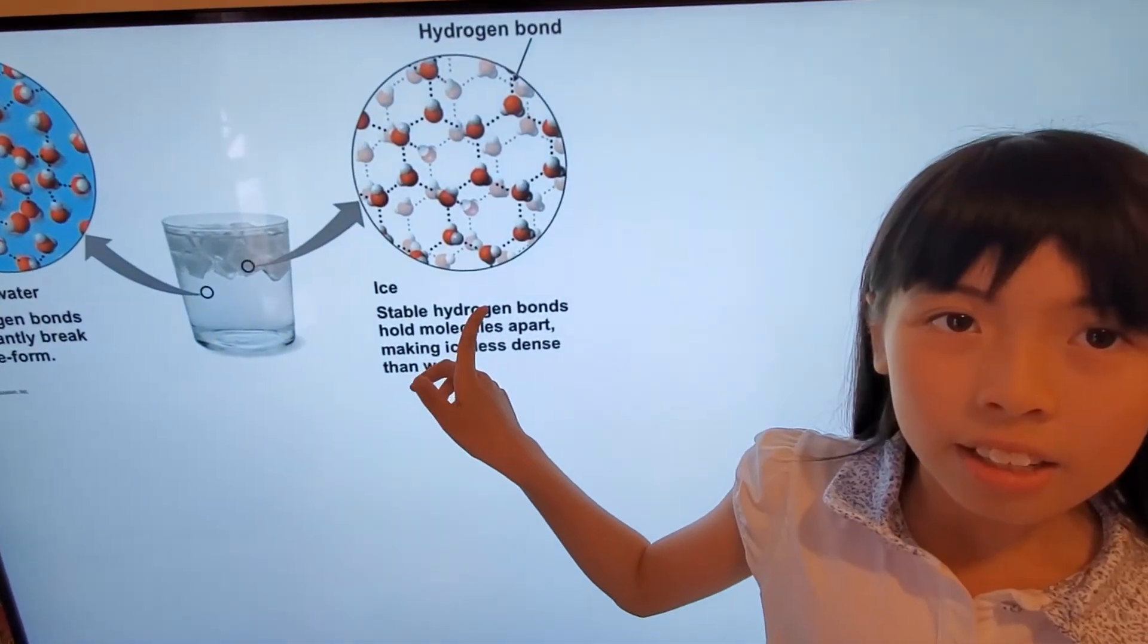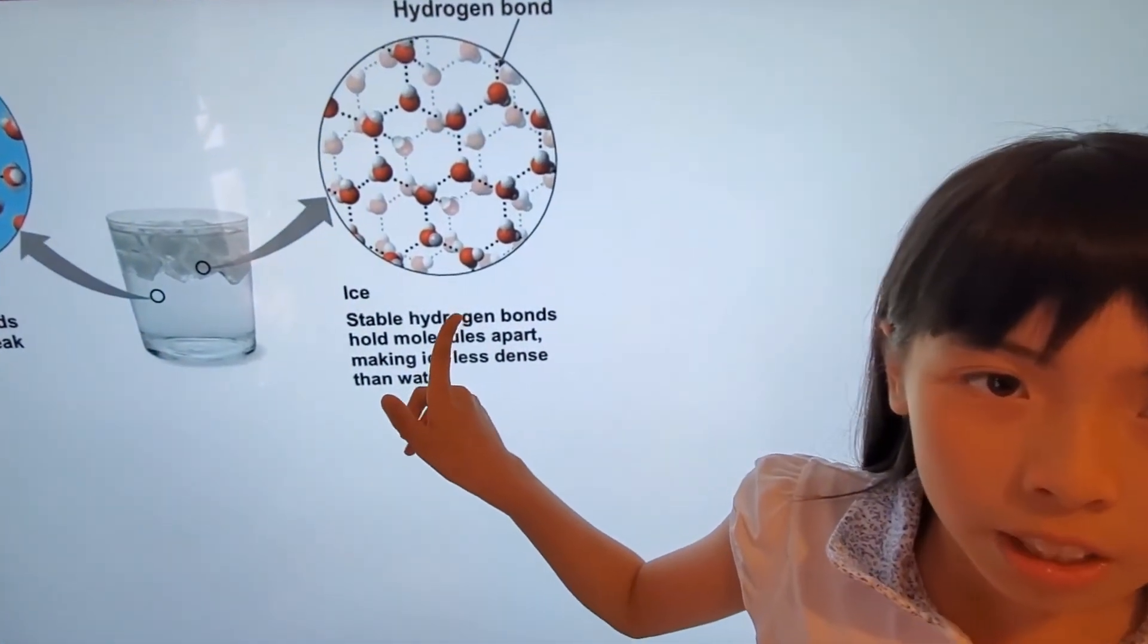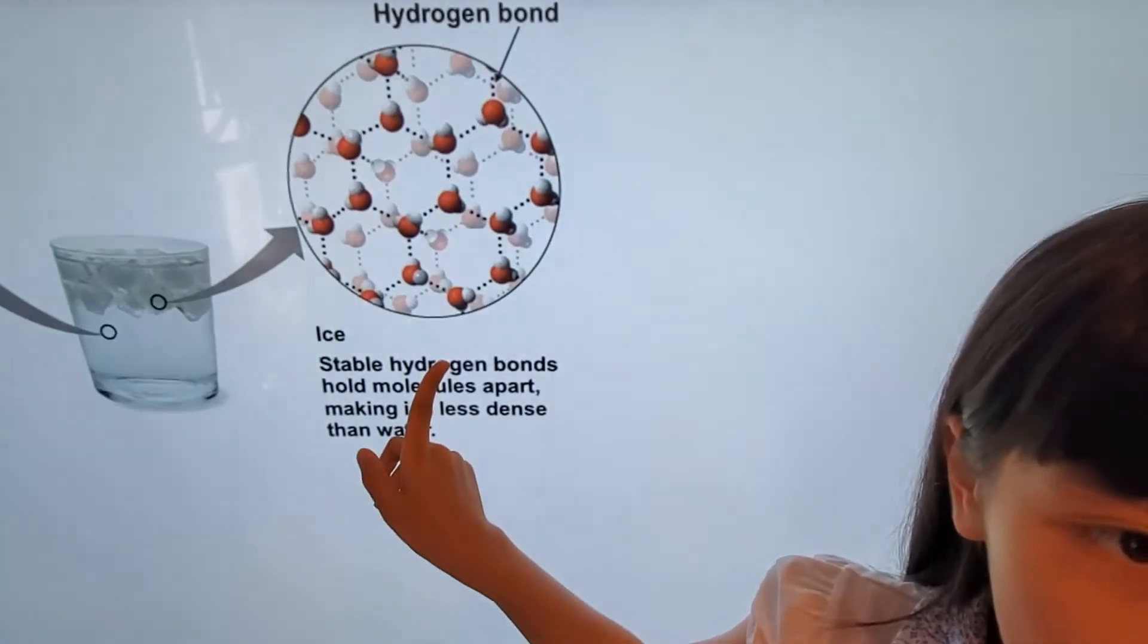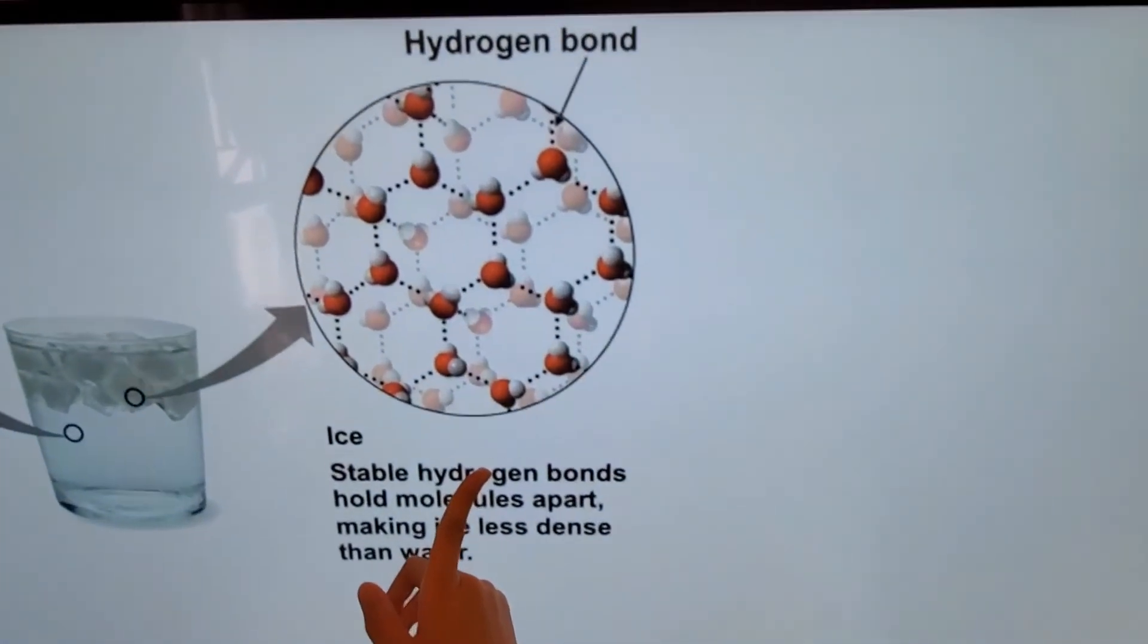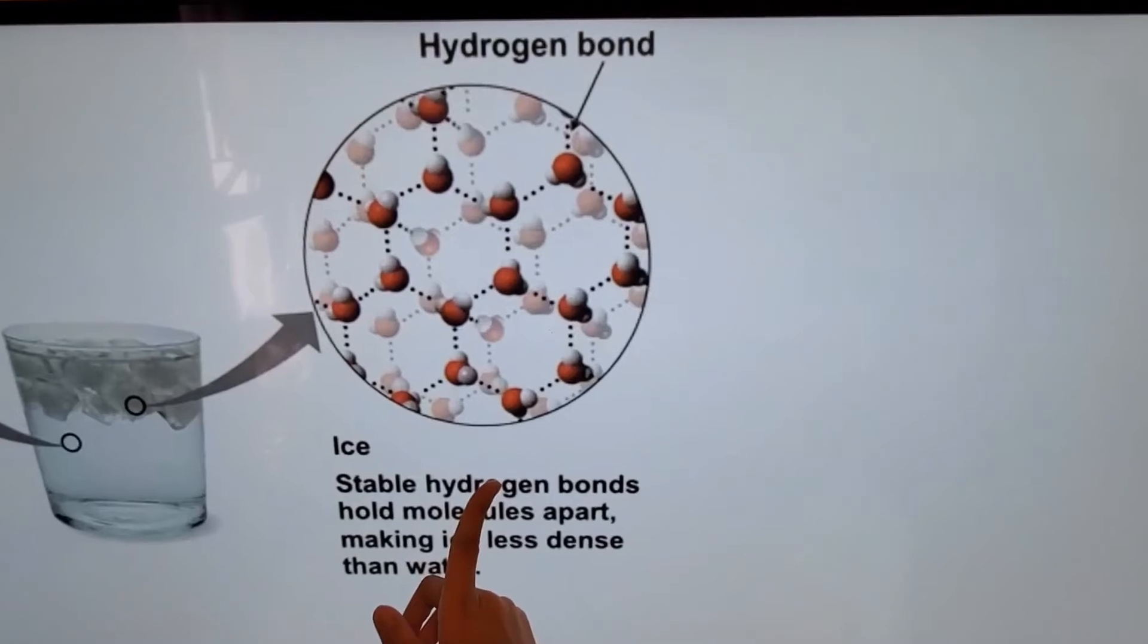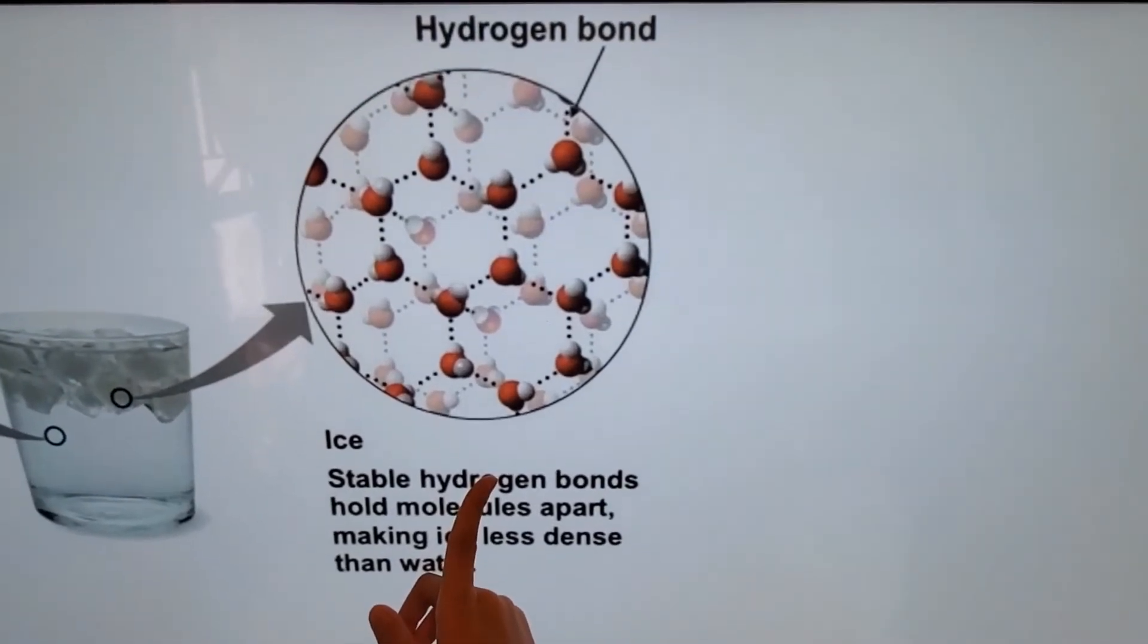In ice, H2O molecules connect to four other H2O molecules, which leads to an open structure and results in a lower density in ice.